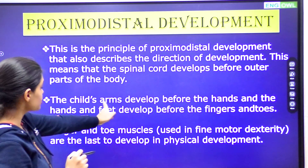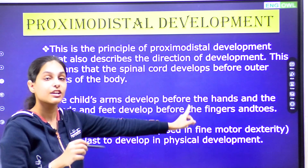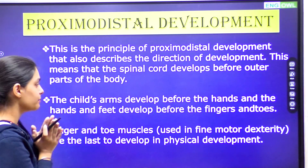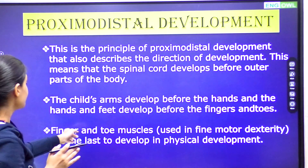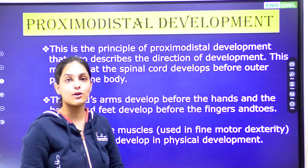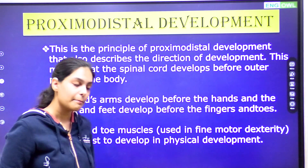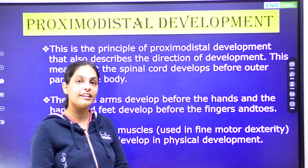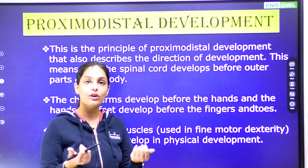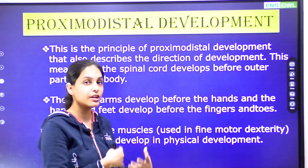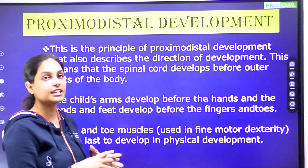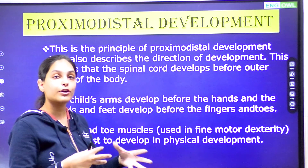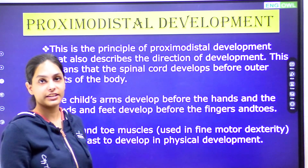In proximodistal development, the child's arms develop before the hands — this is why gross motor development comes before fine motor development. Fingers and toe muscles develop last. First we develop the big muscles of the neck and trunk, and finally we develop the fine muscles of the fingers and toes. The pattern of growth is: gross motor first, then fine motor.